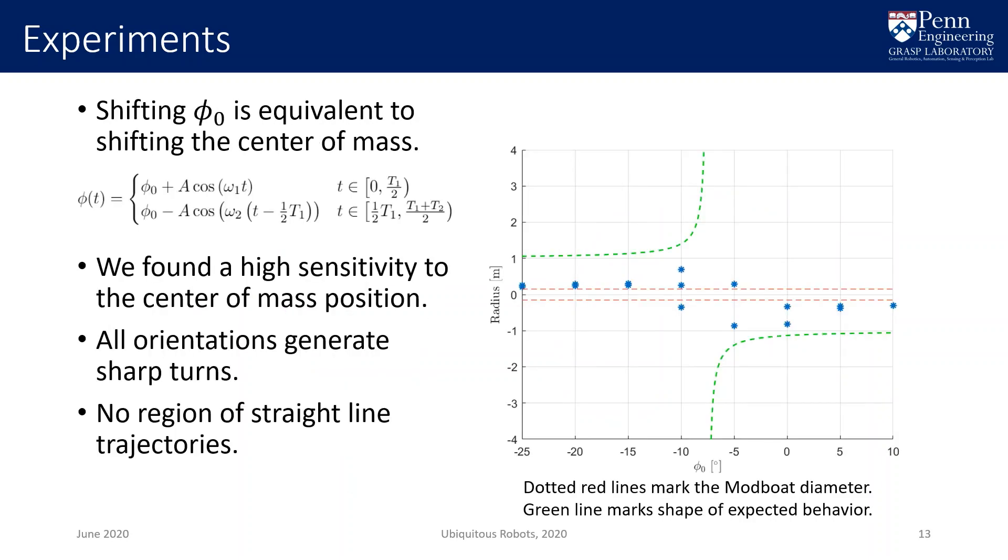Recall that the top body executes a symmetric oscillation around phi naught. If we change the value of phi naught, we are effectively shifting the oscillation of the center of mass. Centering this oscillation should balance the boat and produce trajectories that are effectively straight, but it turns out that this is impossible. To evaluate the trajectories, we ran the modboat in open loop for 30 seconds, varying only the value of phi naught. We then fit a circle to the resulting trajectory and reported its radius as a measure of curvature, with positive radii for counterclockwise curves and negative radii for clockwise ones.